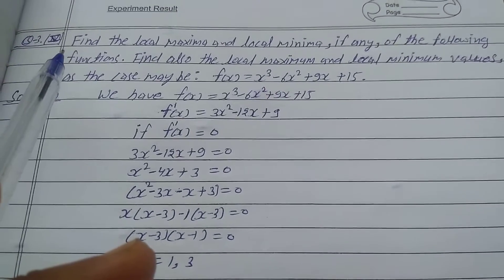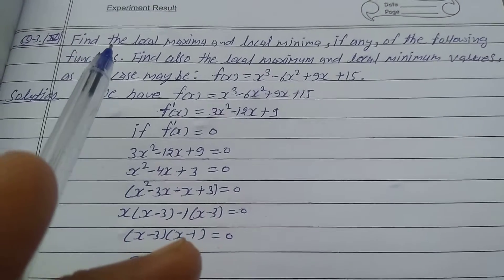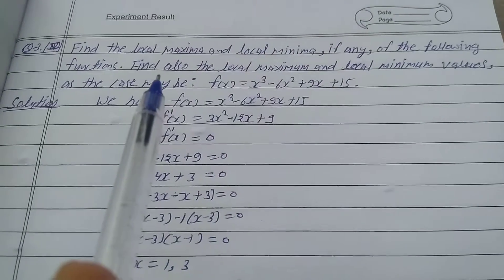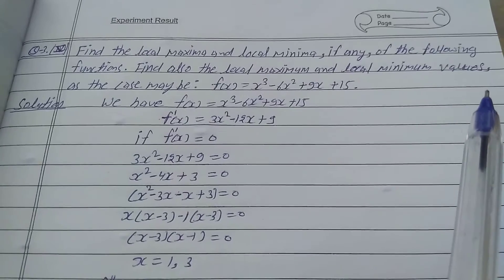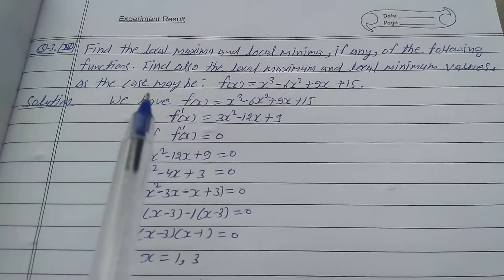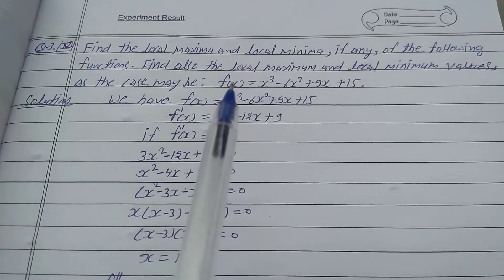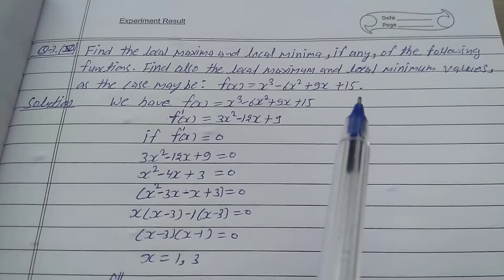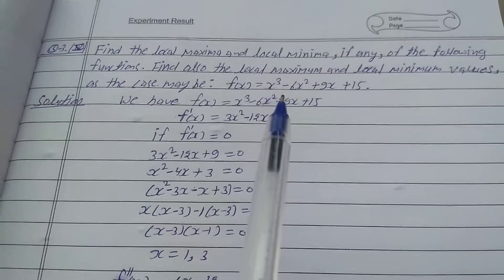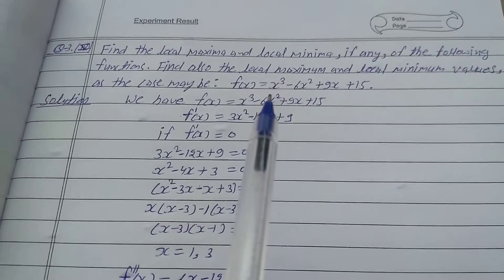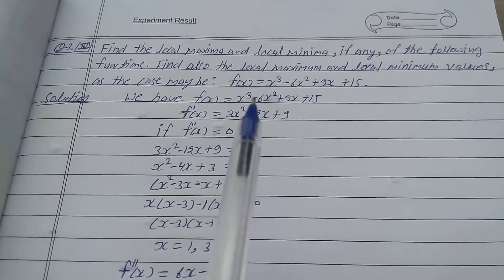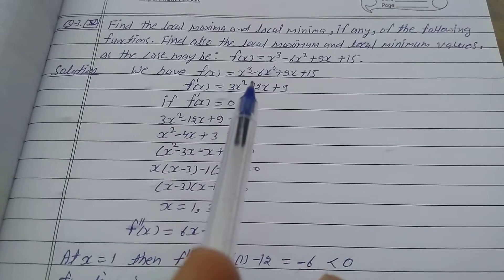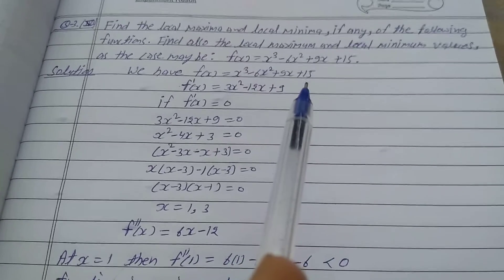Exercise question number 3, part 5, class 12th: find the local maxima and local minima, if any, of the following function. Also find the local maximum and minimum values. f(x) = x³ - 6x² + 9x + 15. We need to find the maxima and minima points and also the maximum and minimum values.